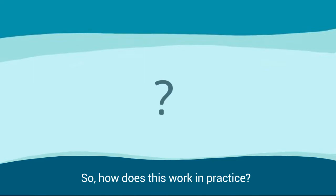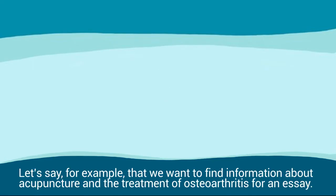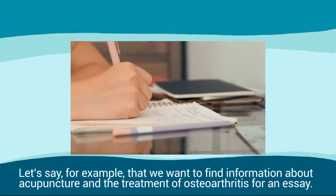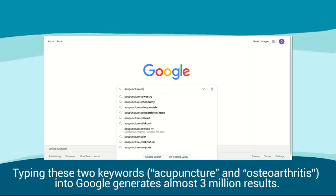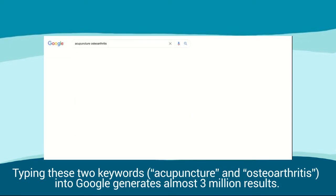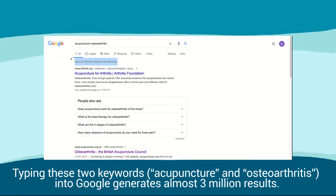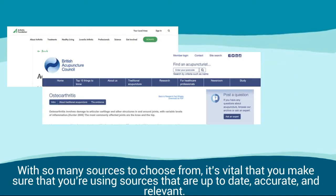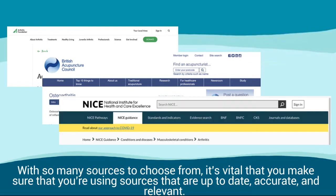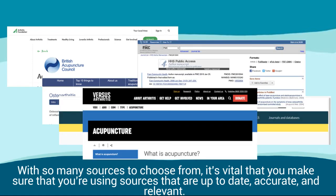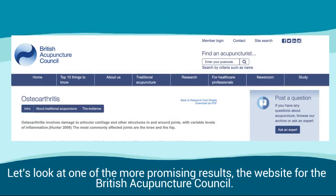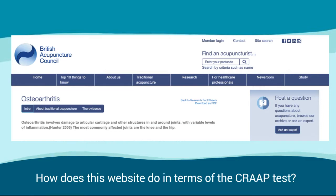So how does this work in practice? Let's say, for example, that we want to find information about acupuncture and the treatment of osteoarthritis for an essay. Typing these two keywords, acupuncture and osteoarthritis, into Google generates almost three million results. With so many sources to choose from, it's vital that you make sure that you're using sources that are up to date, accurate and relevant. Let's look at one of the more promising results: the website for the British Acupuncture Council. How does this website do in terms of the CRAP test?